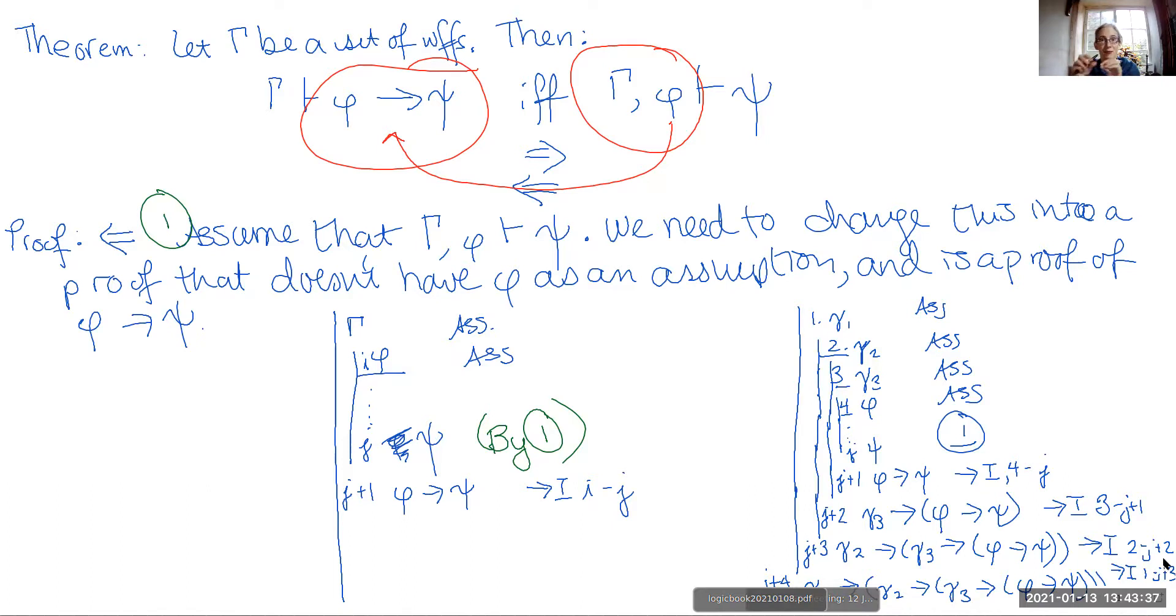So this method of kind of peeling away your assumptions works, you can get to a point where you don't have any assumptions left at all. So when I said over here that gamma could in fact be empty, this is what I was saying. If you can prove something without any assumptions at all,